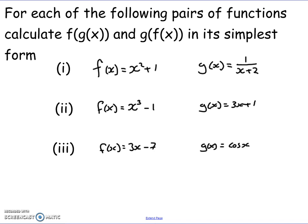The first one was when I gave you f(x) = x² + 1 and g(x) = 1/(x+2). The second one was when f(x) was x³ - 1 and g(x) was 3x + 1. And the third one, f(x) was equal to 3x - 7 and g(x) was equal to cos x, so we introduced trig functions.